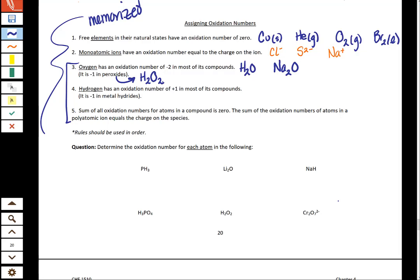So hydrogen on our next rule has an oxidation number of one in most of its compounds. And when I say one, I mean plus one. So let's look at something like methane CH4. This would have a hydrogen that has an oxidation number of plus one. If we have something like sugar C6H12O6, that hydrogen has a plus one.